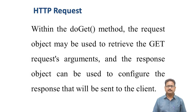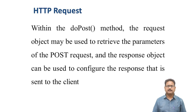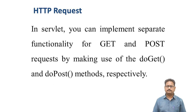Within the doGet method, the request object may be used to retrieve the GET request arguments, and the response object can be used to configure the response sent to the client. Within the doPost method, the request object may be used to retrieve the parameters of the POST request, and the response object can be used to configure the response sent to the client. In a servlet, you can implement separate functionality for GET and POST requests by making use of the doGet and doPost methods respectively.